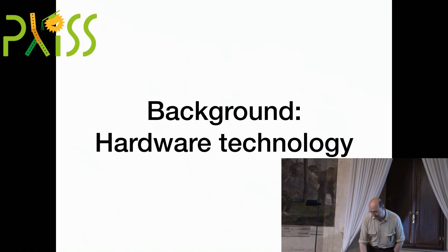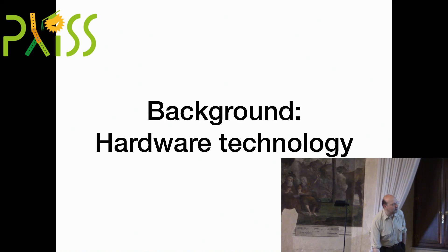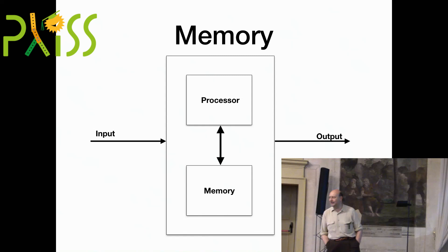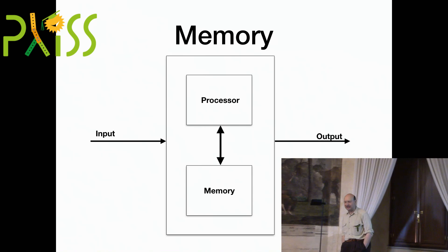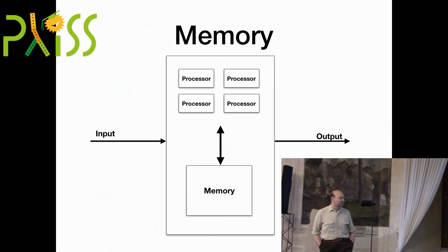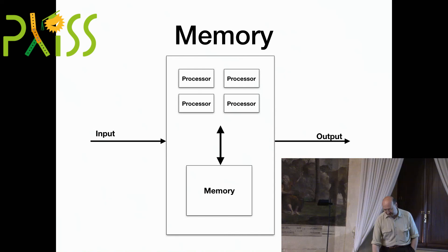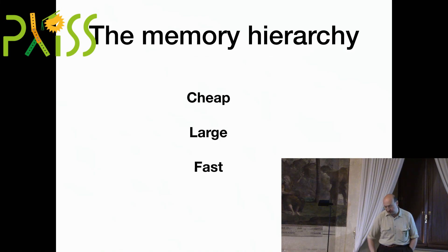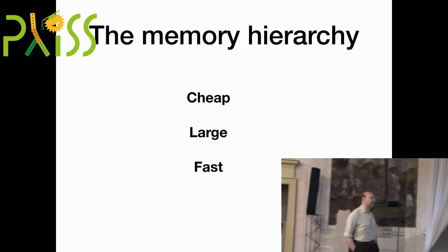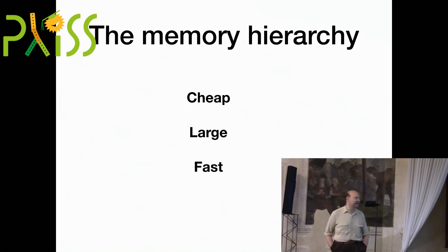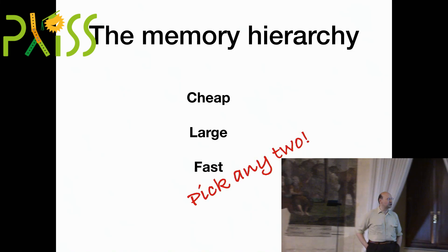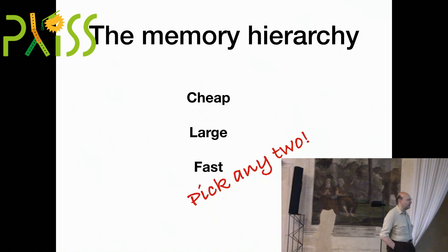This is probably the first picture you ever saw as an introduction to computer science. It only has a couple of elements. The important thing here is that memory is at the center of all of this compute. The properties of memory are really essential. We would like our memories to be cheap — because we want lots of them — large because we want to store a lot of stuff without having to compress it down, and we want them to be fast.